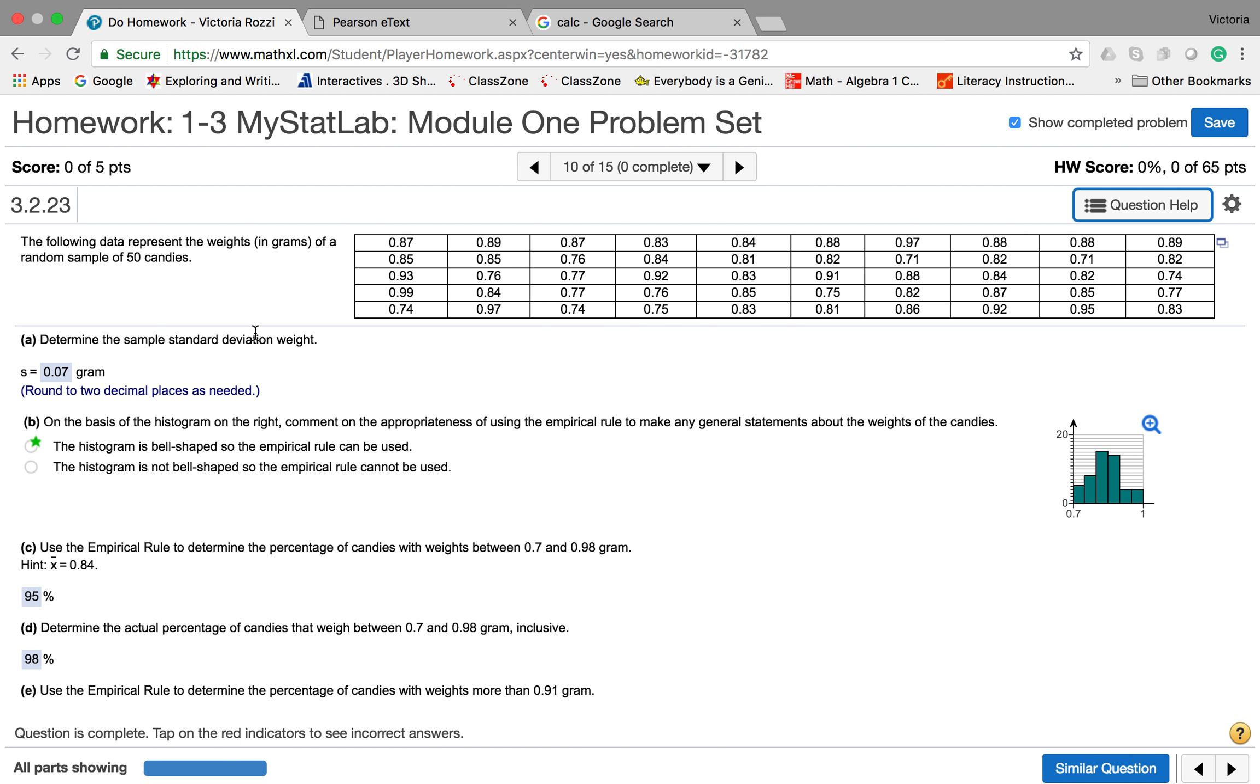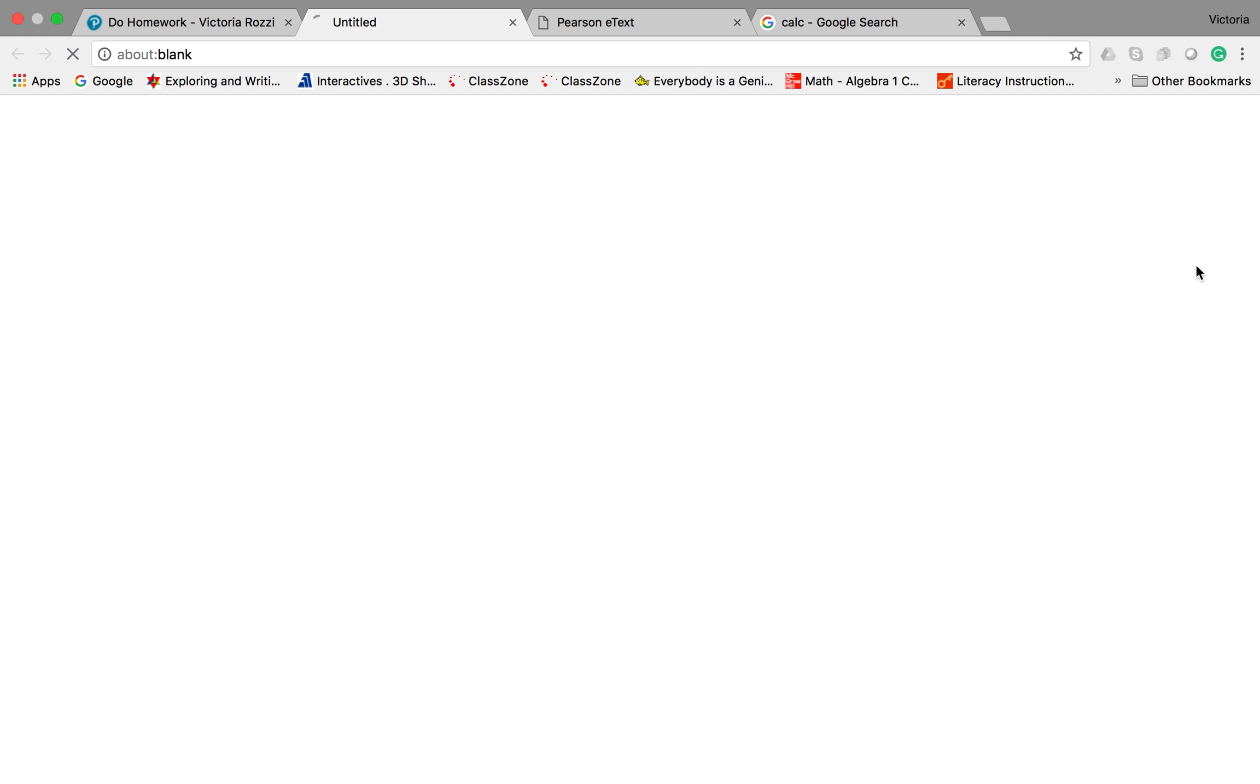The first question that we're asked is to get the sample standard deviation. To do that, you're going to go to this little box here in blue, click on it, and open this in StatCrunch.